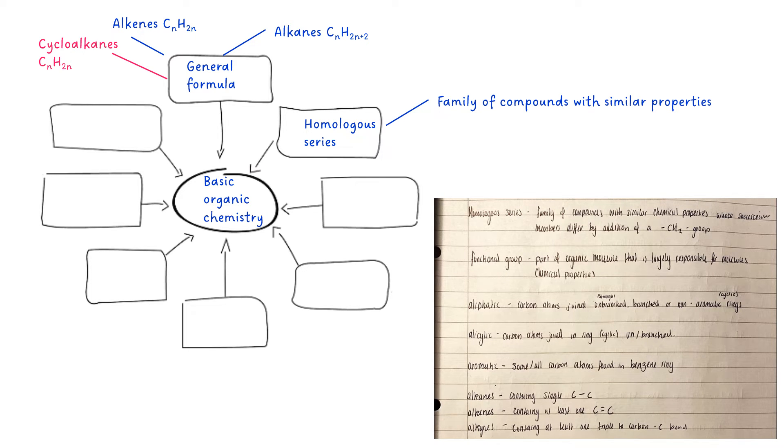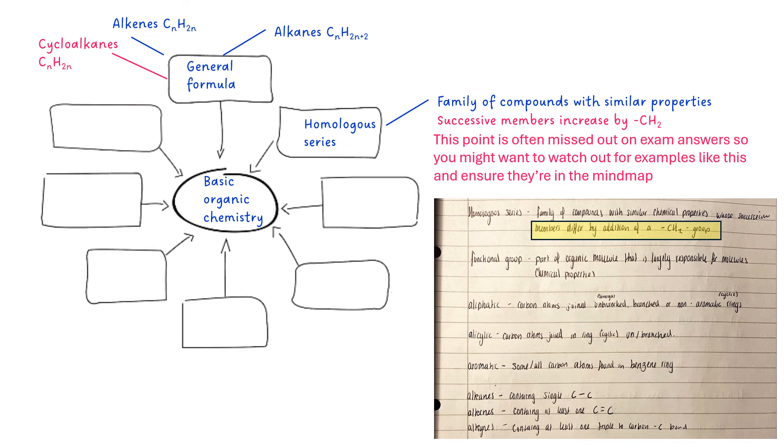An homologous series is a family of compounds with similar properties, but in the IS notes I've put that the successive members differ by the addition of a CH2 group. Now this is something that quite often people miss out, so if you spot an example like this, add it into your mind map.